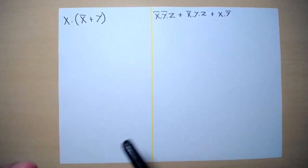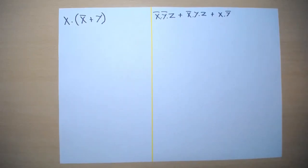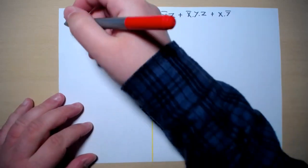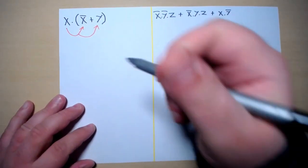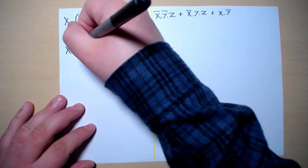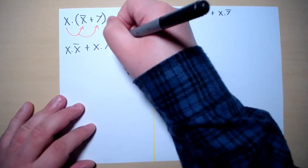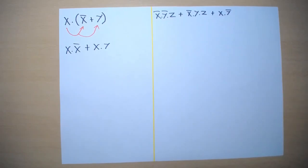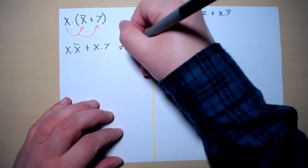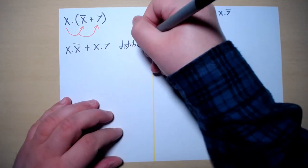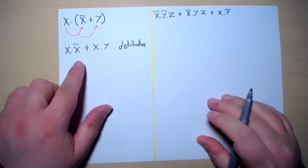We want to minimize it. When there is a bracket, probably the best thing to do is to expand that bracket using the distributive law, which means we can expand X with X-naught and with Y. We will obtain X and X-naught or X and Y.